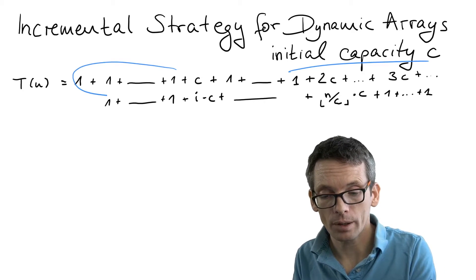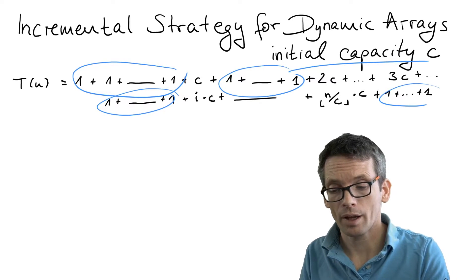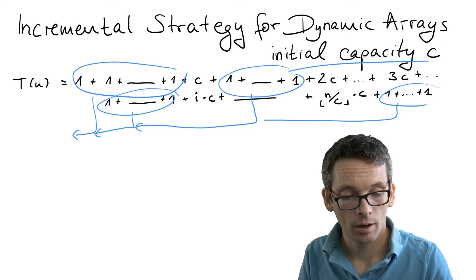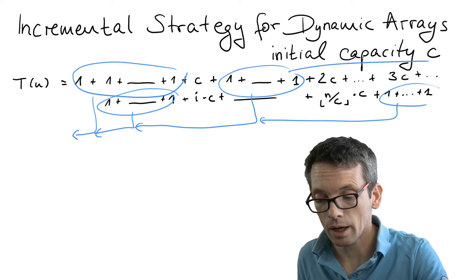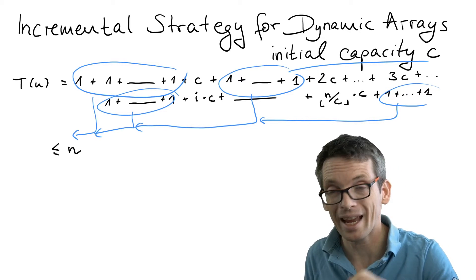First of all, we take all of the ones and add these. For that, we just need to know how many ones do we have, or how many ones do we have at most. We only have overall n push operations, so we have at most n such ones. So n is an upper bound on the number of these ones.